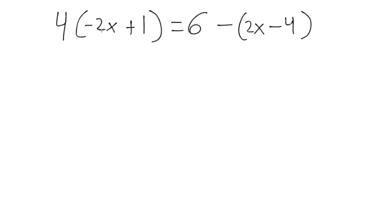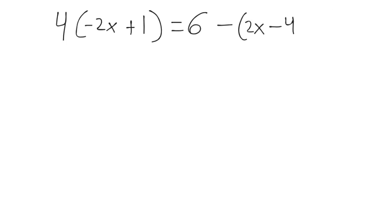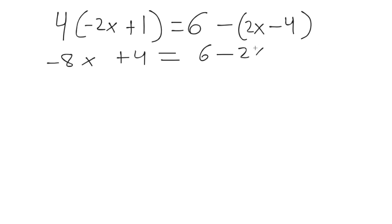Let's do another example: we have 4 minus 2 times the quantity x plus 1 equals 6 minus 2 times the quantity x minus 4. There are no fraction decimals, but step 2 is remove all parentheses. So we have to distribute the 4 on the left side and distribute the negative on the right side.